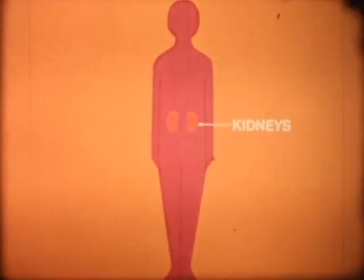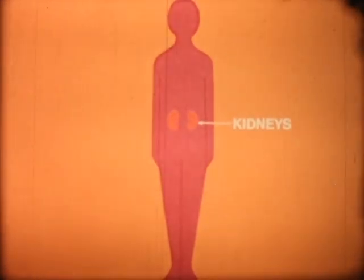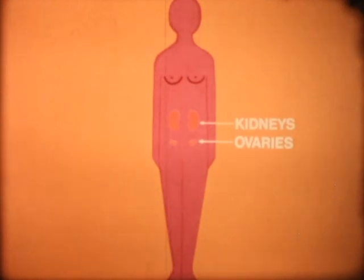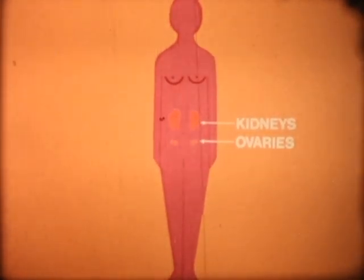Two other important parts of the body which are made by the middle layer of cells are the kidneys — organs whose function is the excretion of liquid wastes from the body — and the sex organs: the testes in the male and the ovaries in the female, which produce the reproductive cells.